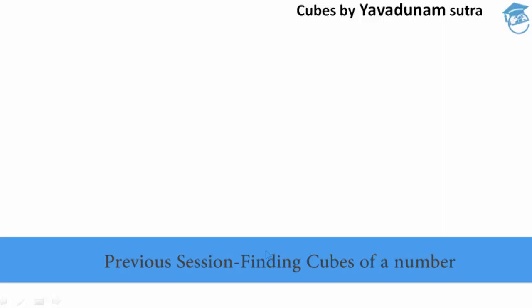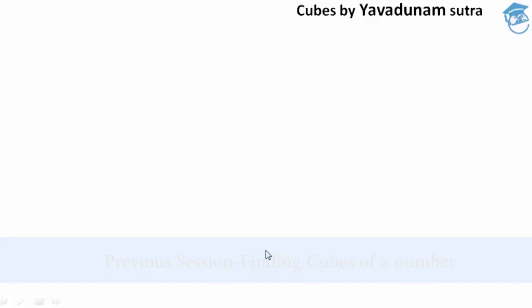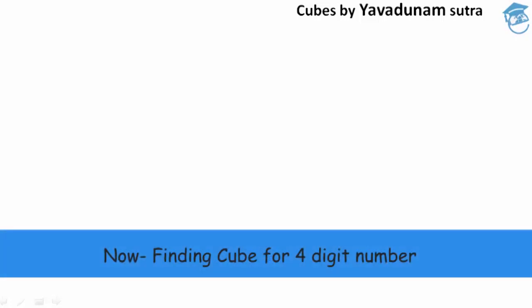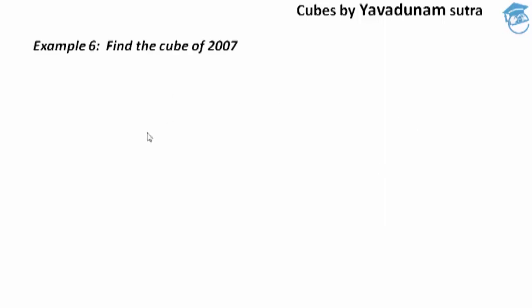Hi friends, welcome to ATPDA World, this is Purun Ganga. In our last session we saw some examples regarding how to find the cube of a given number using Evadunam Sutra. And now in this session, we are going to learn how to find the cube of a given 4-digit number using Evadunam Sutra. The example I am going to take in this session is: find the cube of 2007.